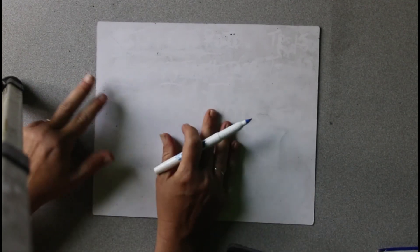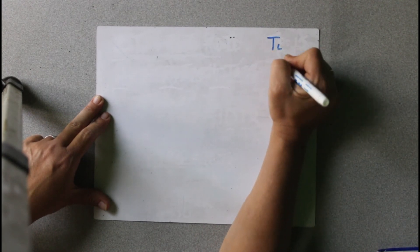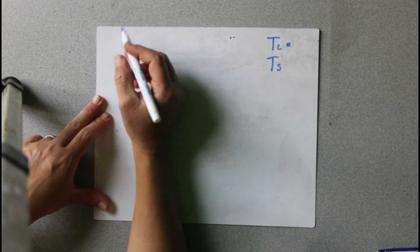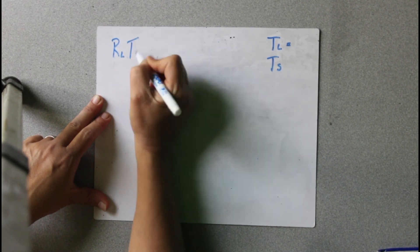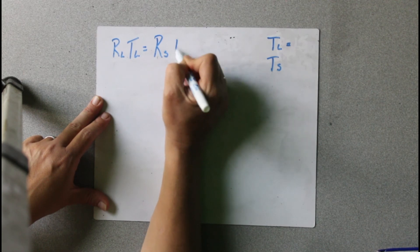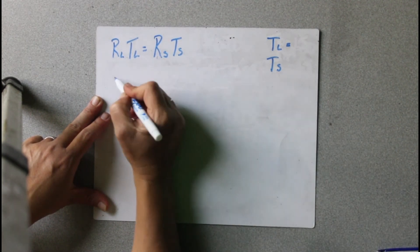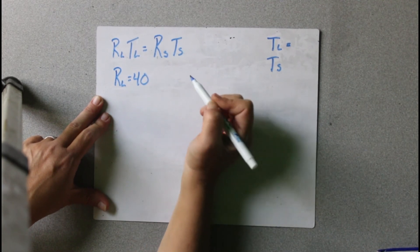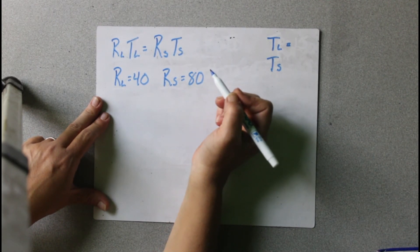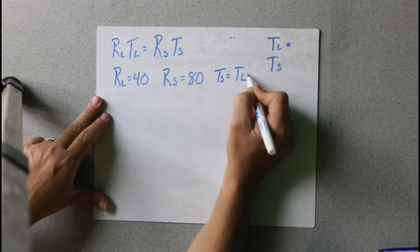Solve the following system of equations for TL and TS. So we're looking for TL and TS. The equation they give us is RL times TL equals RS times TS. Then it also gives us RL equals 40, RS equals 80, and TS equals TL minus 5.